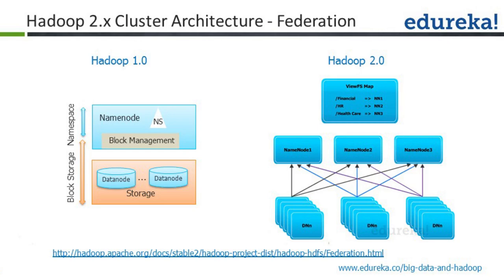This is like a cluster-within-a-cluster concept. The data gets stored into data nodes and the metadata gets stored in RAM. If the metadata is lost, there is no way to fetch that data back. The namespace is a logical entity — it is more like an alias and cannot fail. The shared block pools are what actually get copied and stored on the hard disk of the name nodes.